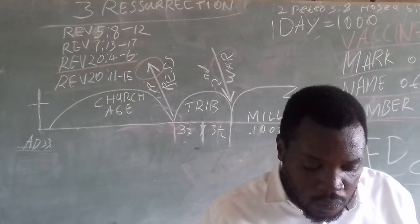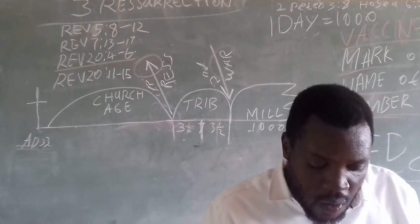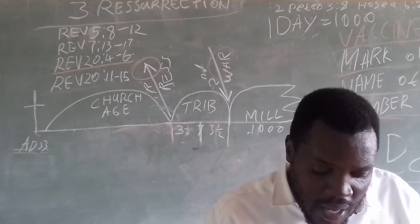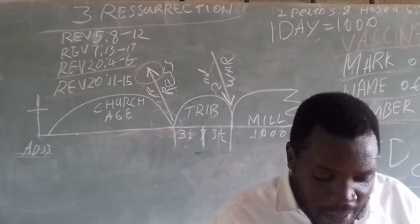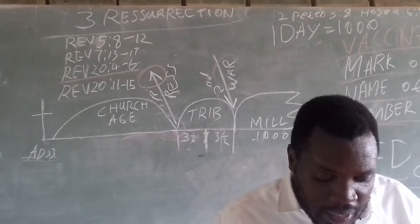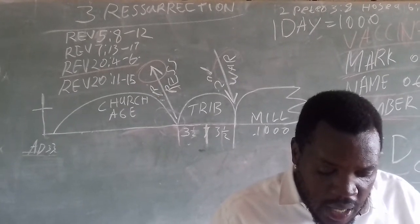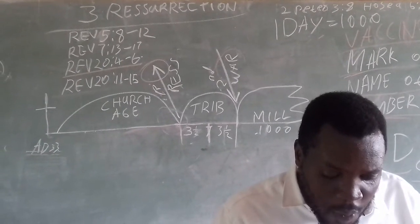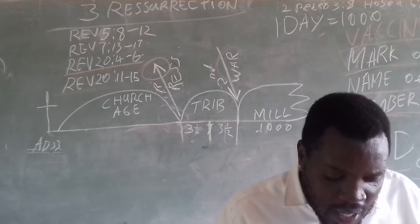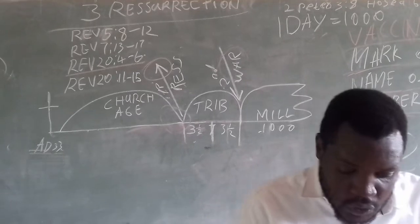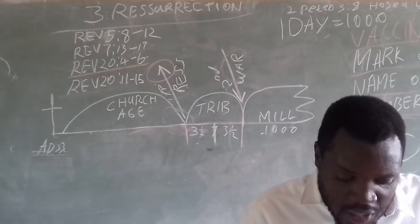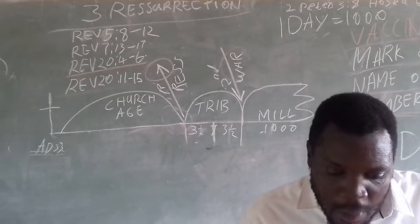Then I saw a great white throne and him who sat on it, from whose face the earth and the heaven fled away, and there was found no place for them. And I saw the dead, small and great, sitting before God, and books were opened. And another book was opened, which is the book of life. And the dead were judged according to their works by the things which were written in the books.